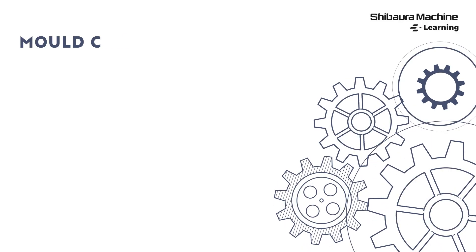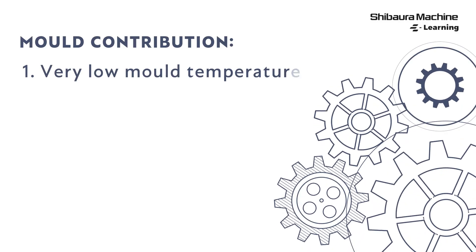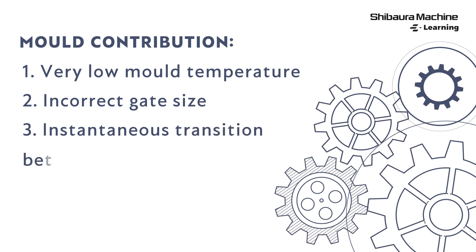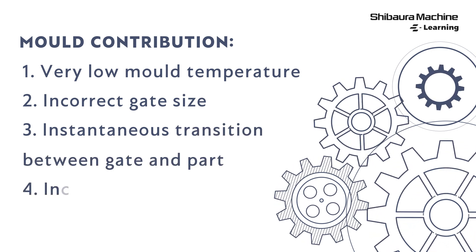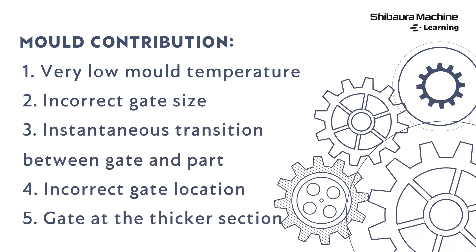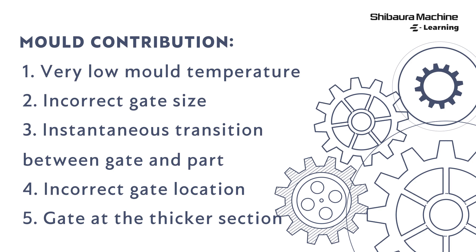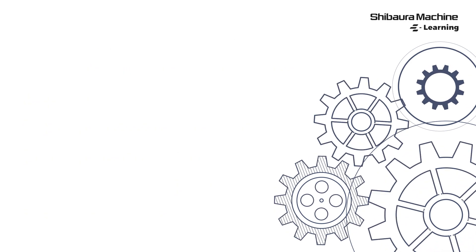When a molded part has jetting, the part fails in any type of endurance test, so avoiding jetting is of paramount importance. Plastic injection molding machine manufacturers have provided a stepped injection profile setting in the process pages. By using the stepped injection profile, we can avoid jetting in the molded part.